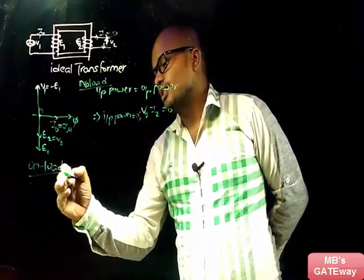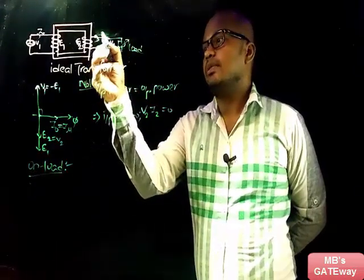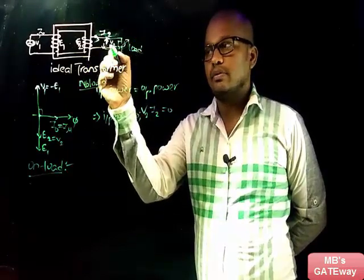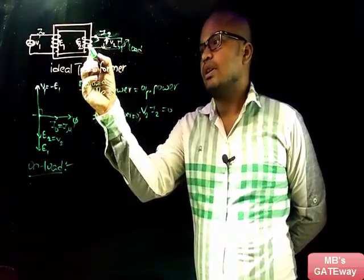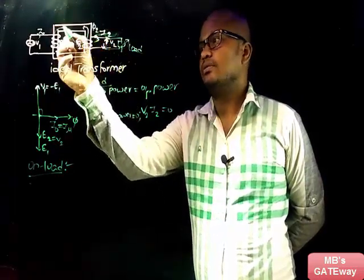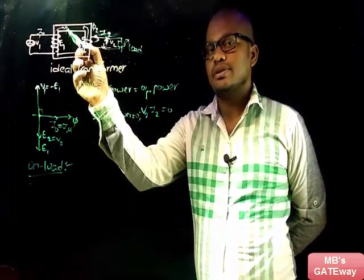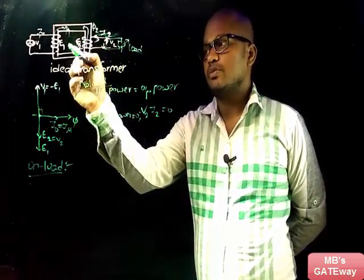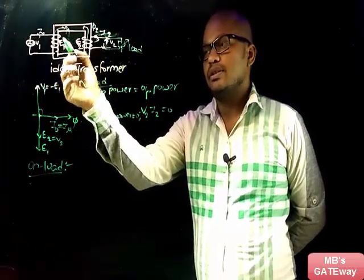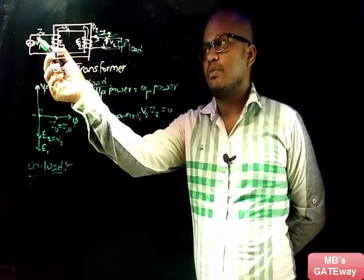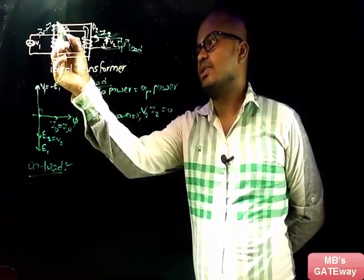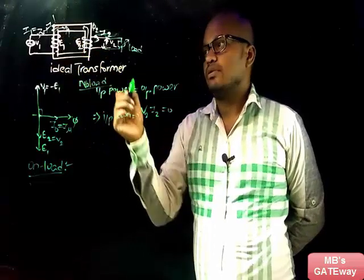When a load is connected, there will be a current I2 flowing in the secondary winding of the transformer. Because of this, there will be a flux phi2, and this flux will be in the opposite direction to flux phi1. This flux phi2 will decrease phi1, and consequently the induced EMF will get reduced.